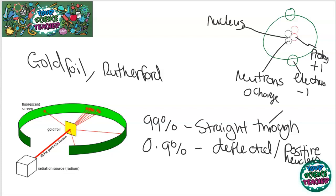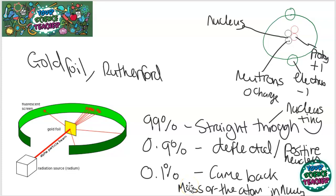The fact that most of them went straight through is because the nucleus is very tiny but some of them deflected because of this positive nucleus. And then 0.1% of them came back, and because they came back it meant that all the mass of the atom must have been in that nucleus. You will know this because you'll have done this in chemistry, atomic structure.